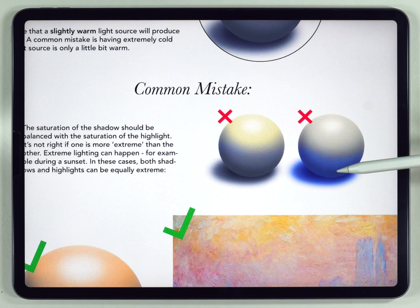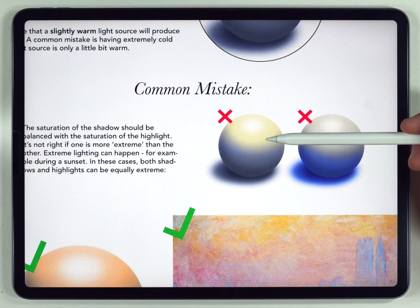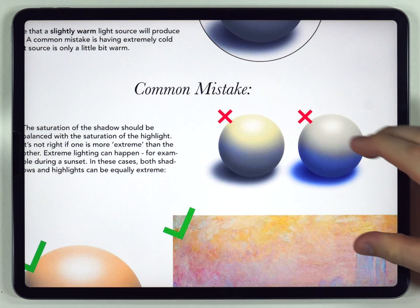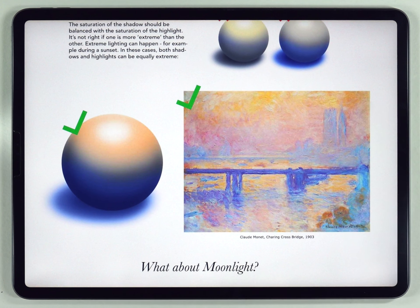An extremely saturated shadow — not likely. An extremely saturated highlight — also not likely. This is well demonstrated here: when you have extremely colored, saturated light, it's going to create extremely colored, saturated shadows. And this is why so often you see sunset pictures with these almost two complementary tones very prominently in the layout.